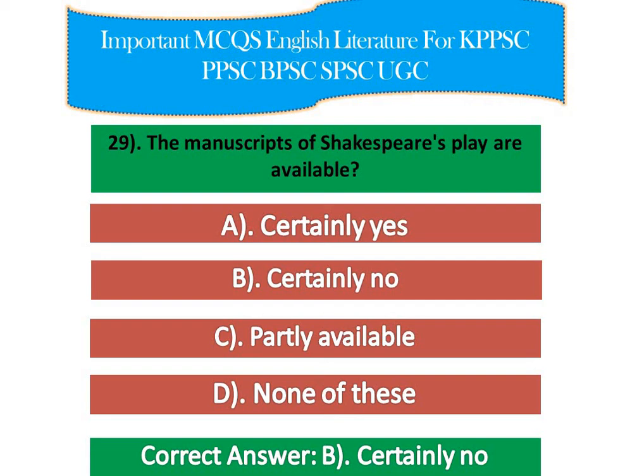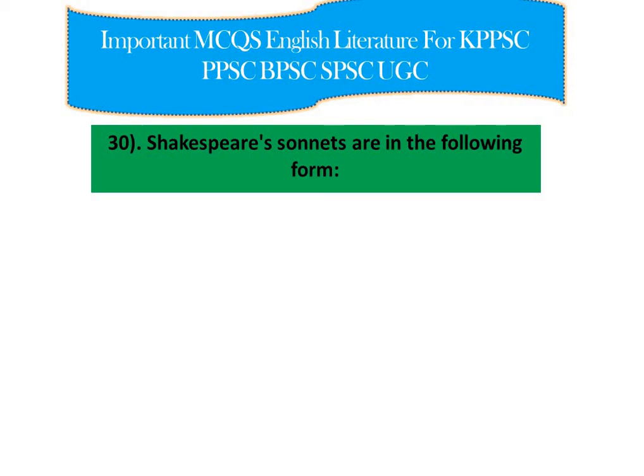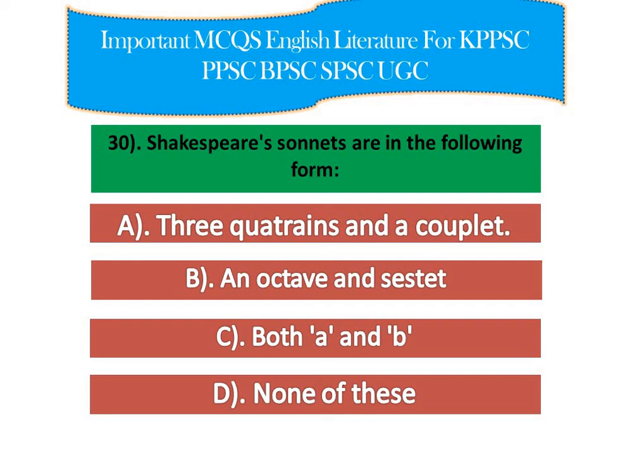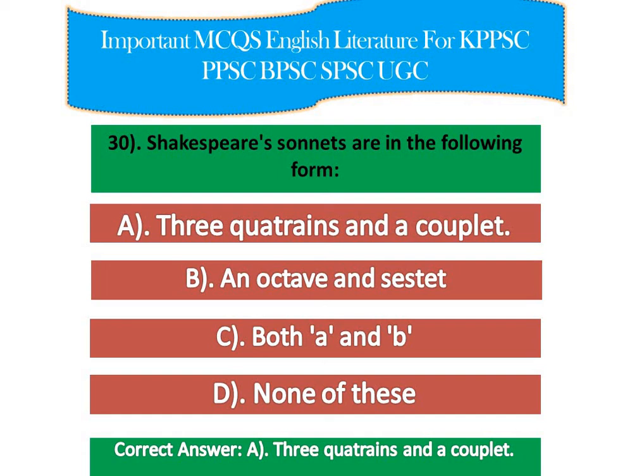Question number five: Shakespeare's sonnets are in the following form — option A: three quatrains and a couplet, option B: an octave and a sestet, option C: both A and B, option D: none of these. The right option is A — three quatrains and a couplet. Shakespearean sonnets are composed in iambic pentameter; the rhyme scheme is ABAB CDCD EFEF GG, composed in three quatrains and a final concluding couplet.